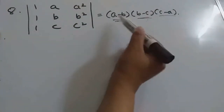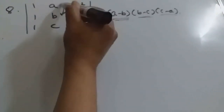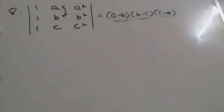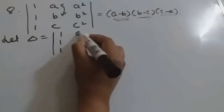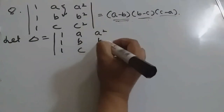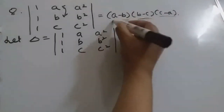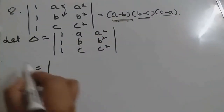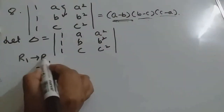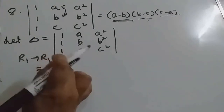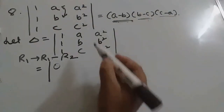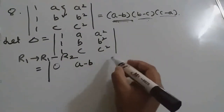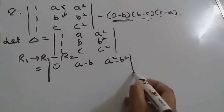A minus B we can get if we subtract R1 and R2, so let's start doing that. Let delta equal the given determinant. So A minus B we will get when we do R1 minus R2. So 1 minus 1 gives 0, R1 is changing, A minus B we are getting, and A squared minus B squared.